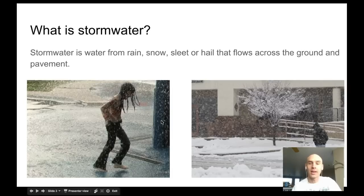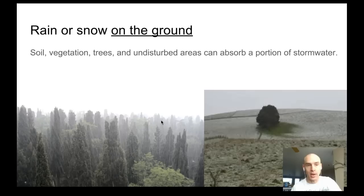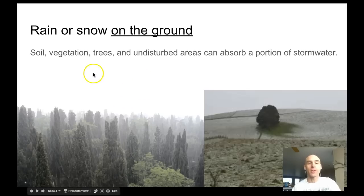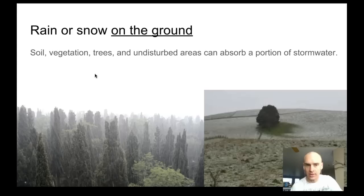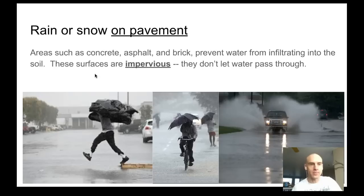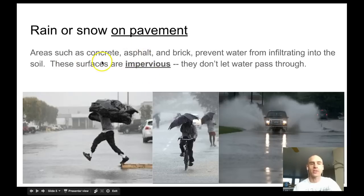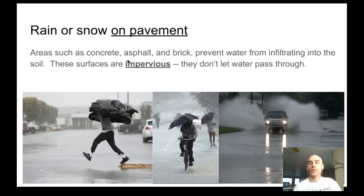First, let's look at what stormwater is. It is water from rain, snow, sleet, or hail that flows across the ground and across the pavement. Rain or snow on the ground - soil, vegetation, trees, and undisturbed areas can absorb a portion of that stormwater. Jot those down in your notes. Anything on the pavement involves impervious surfaces.